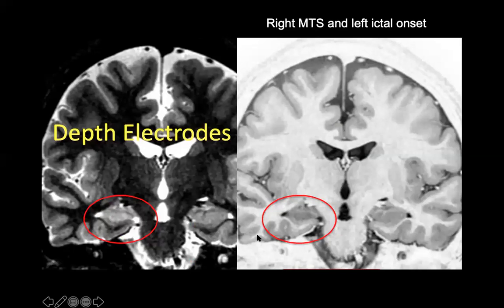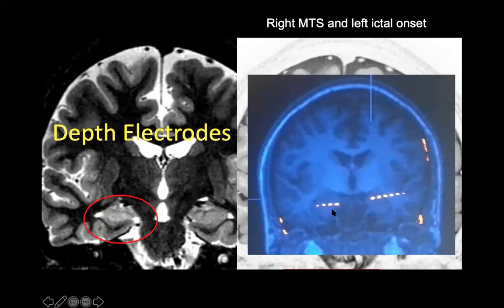In patients with bilateral temporal lobe epilepsy, the MRI showed MTS on the right side, but interictal and ictal scalp EEG showed left ictal onset. Because of that, we performed bilateral depth electrode implantations. These are useful for those with MTS when you are worried about bilateral epileptogenicity.